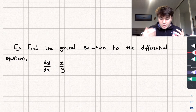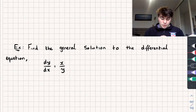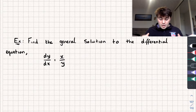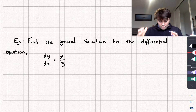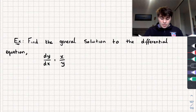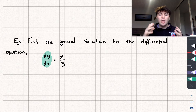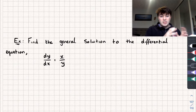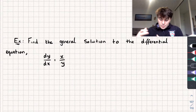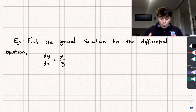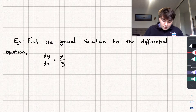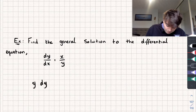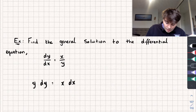So let's use this method to solve this question — we need to find the general solution. The way this method works is we're going to separate our variables. Using this method, we can treat dy/dx as if it were a fraction, like with the chain rule. We move all of our y's and dy's onto one side and all of our x's and dx's onto the other. I'm going to multiply both sides by y and also by dx, giving us y dy equals x dx.